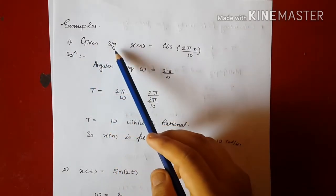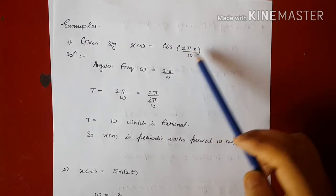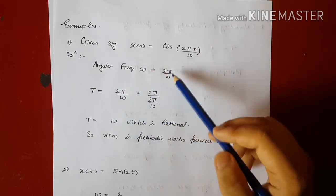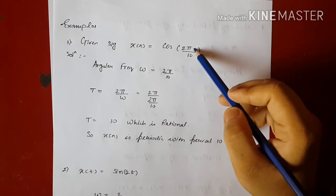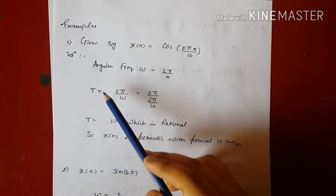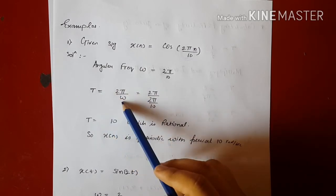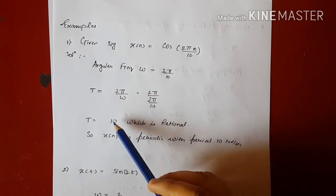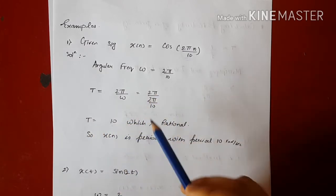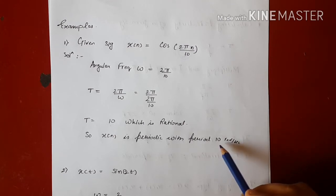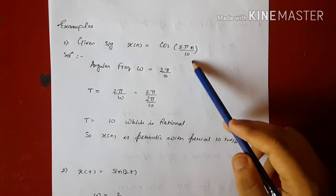Example 1: given the discrete time signal x[n] = cos(2πn/10). The angular frequency ω = 2π/10. Using the formula T = 2π / ω, we get T = 2π / (2π/10); the 2π cancels and we get T = 10, which is rational. So x[n] is periodic with a fundamental period of capital N = 10.